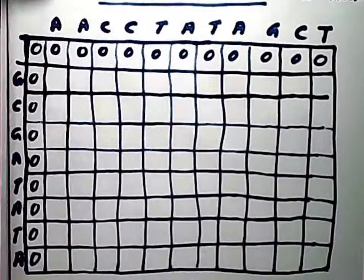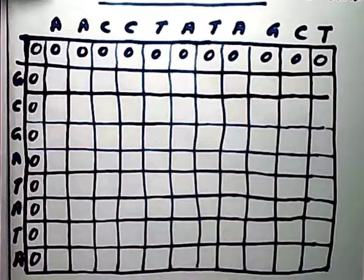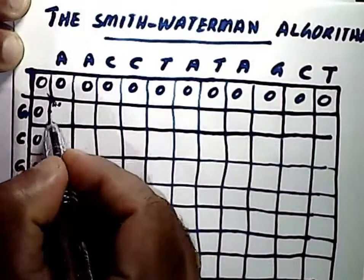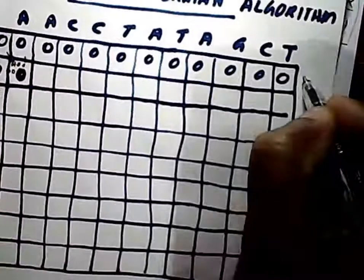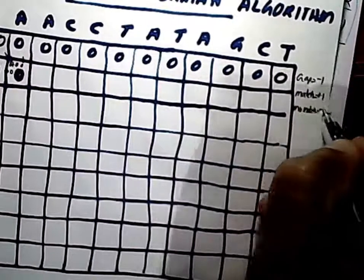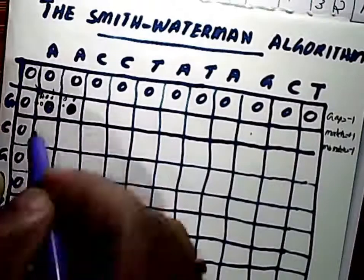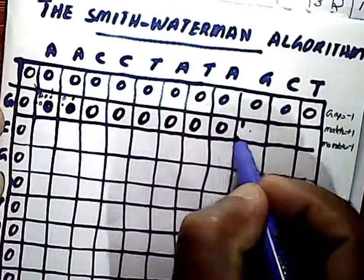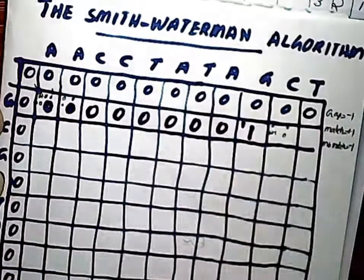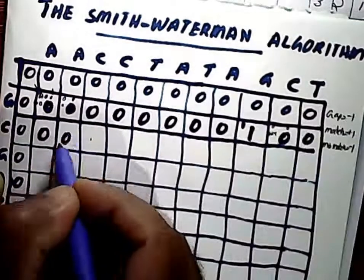We form M+1 rows and N+1 columns. The leftmost column and top row of the matrix will be initialized with the value zero. Gap penalty value is minus one, match bonus score is plus one, and mismatch score is minus one. Filling the table is similar to the global alignment algorithm. When we take the diagonal, left, or top values, if the result is negative we write zero — we do not write negative values in the cells.